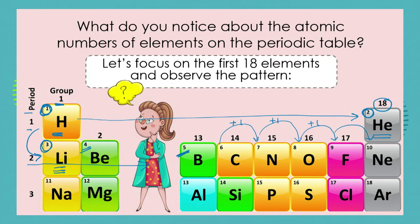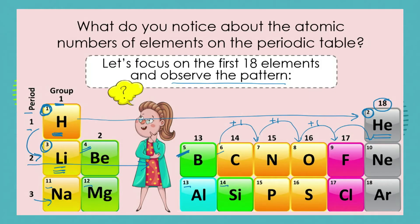We can see there is definitely a pattern. We can go into the third period: 11, 12, 13, 14, and so on. So across a period or across the row of the periodic table, we see that we are increasing the atomic numbers by one every time.